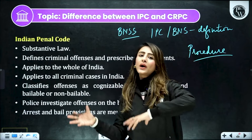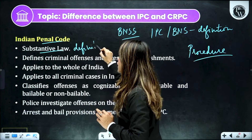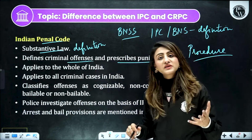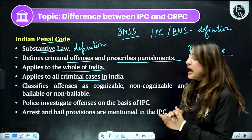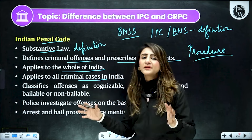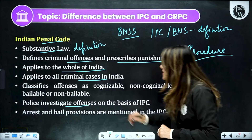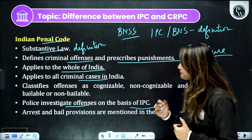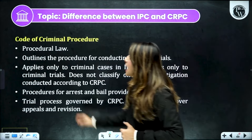Let's understand the major differences between IPC law and CrPC law. Indian Penal Code mein, yeh substantive law hai — matlab yeh definitions offer karta hai, concepts batata hai ki konse cases mein crime maana jayega. Similarly, it defines the criminal offenses aur unki punishments bhi aapki IPC law mein mention rehti hai. Yeh apply karta hai whole of India pe, yeh saare criminal cases pe apply hota hai. Aur IPC mein aur CrPC mein, hum log different types of offenses define kiye hain.